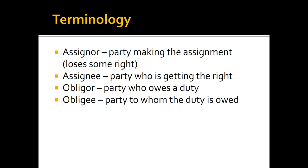We have some terminology here, and this is not the first time we'll use the double-E and the O-R. The assignor is the party making the assignment — the person who did the work and should be getting the money but has decided to assign the right to receive it to a third party. The assignee is the party who is getting the right. The obligor is the person who owes a duty. The obligee is the party to whom the duty is owed.